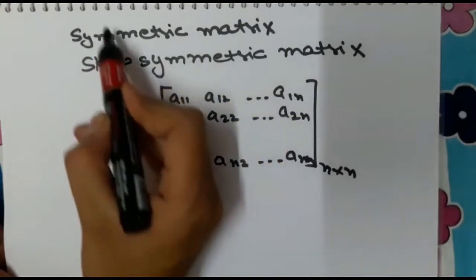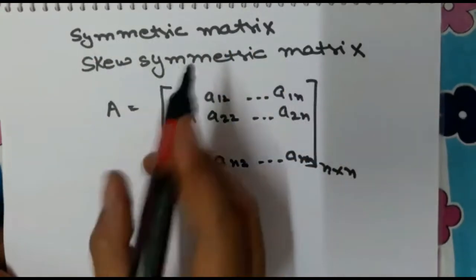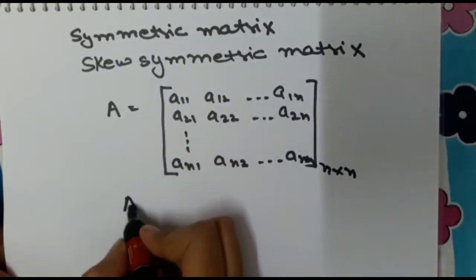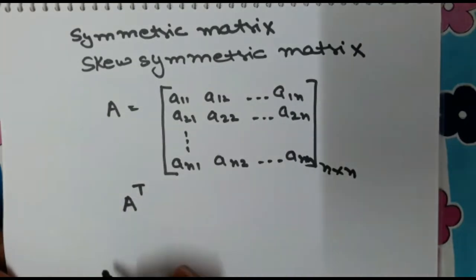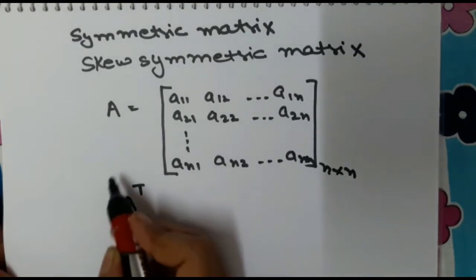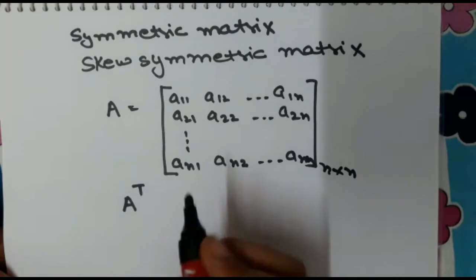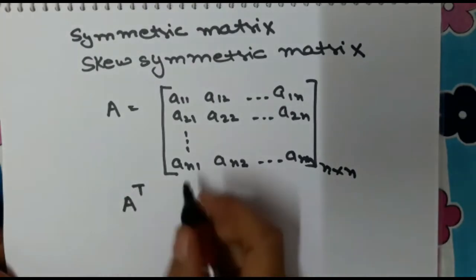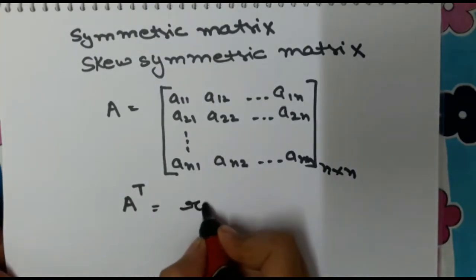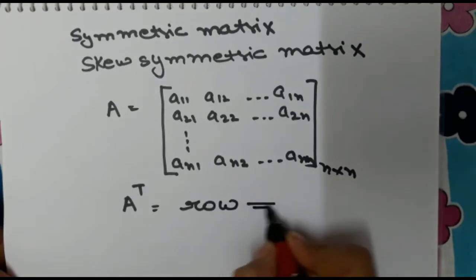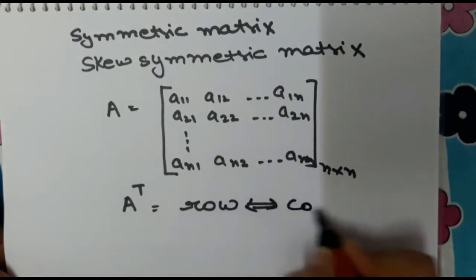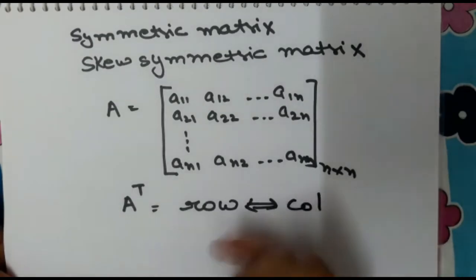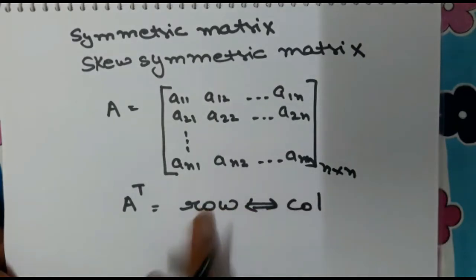For finding the symmetric and skew symmetric matrix, first of all we have to find out what is A transpose. In A transpose, we change row into columns, or we can say that column into rows.